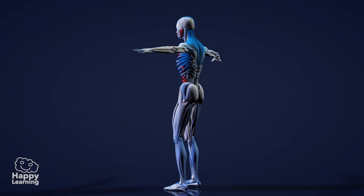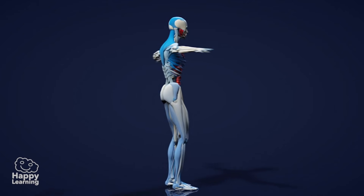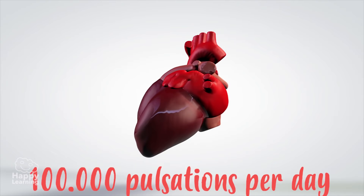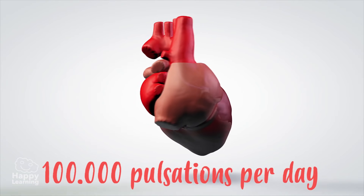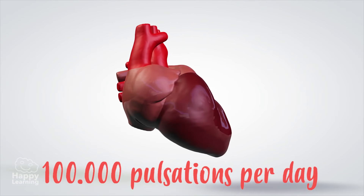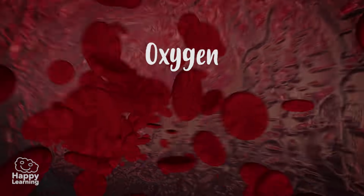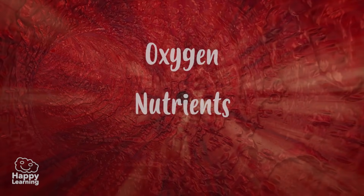The heart has the main role in making sure that the blood travels around the body. With its 100,000 pulsations per day, it ensures that blood circulates throughout our body, allowing it to distribute oxygen and nutrients into our cells.